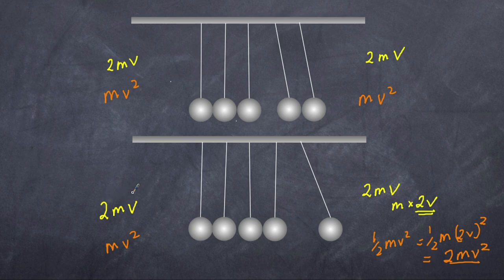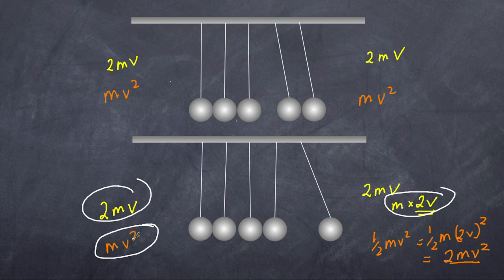So what do you notice? Well yes, momentum is definitely still conserved, no problems. But we're having an initial kinetic energy that is less than our final kinetic energy. We've created energy. We've increased the amount of kinetic energy. Well that's not possible because that violates the conservation of energy.